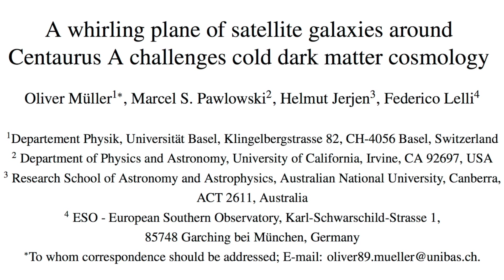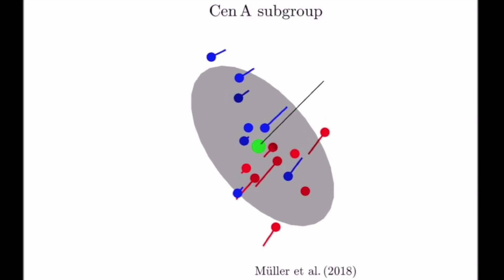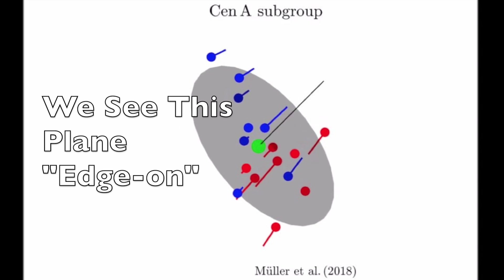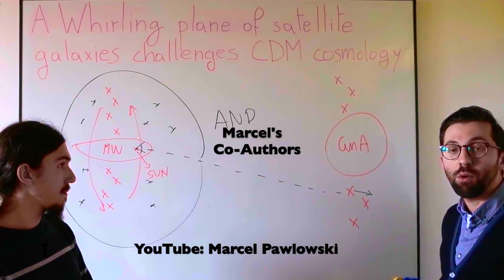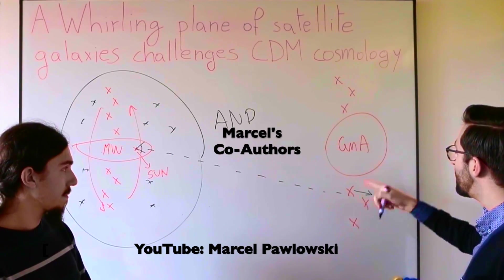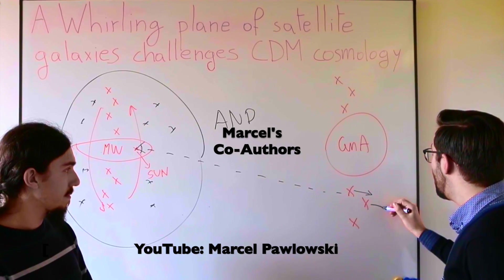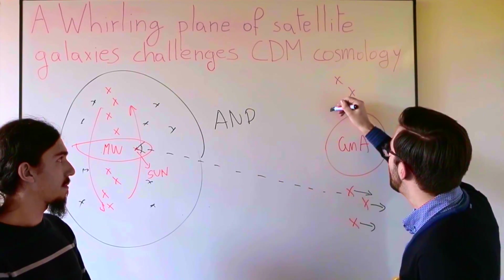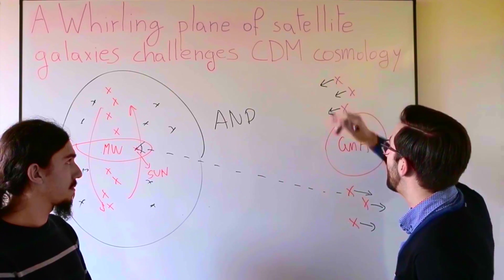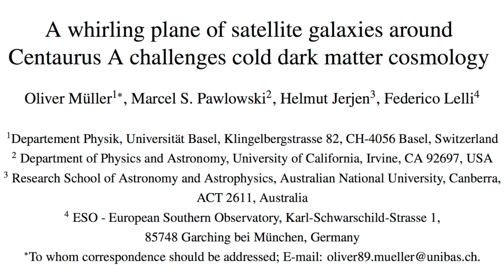For Centaurus A, we have 16 satellite galaxies for which there are velocity measurements. Because we see the plane more or less edge-on, we can see that on one side of the plane, galaxies are moving away from us, and on the other side they are approaching. We look at it from the edge like a spinning wheel, seeing one side moving away and the other moving towards us. That's the indication that this is a rotating plane.